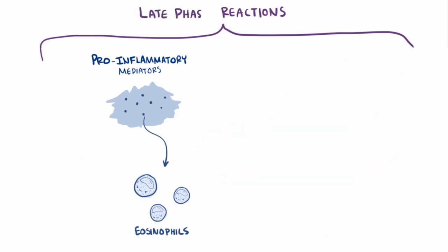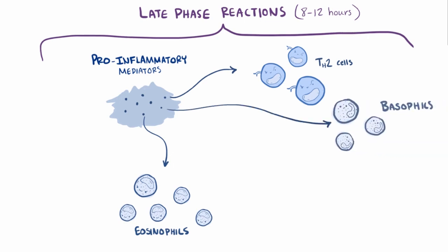There are also late phase reactions, though, which happen 8-12 hours after the second exposure, where even more immune cells like TH2 cells, eosinophils, and basophils, yet another type of granulocyte, are recruited to the site where the allergen is located, because of the cytokines and pro-inflammatory molecules produced during that early phase.